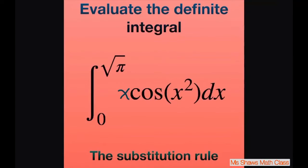Hi everyone. We're going to evaluate the integral from zero to square root of pi of x cosine of x squared dx. We're going to use the substitution rule for definite integrals.